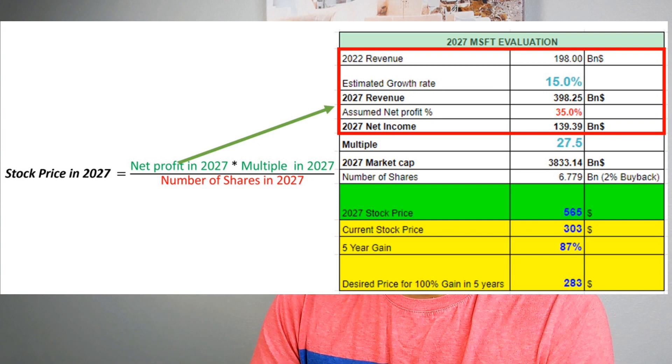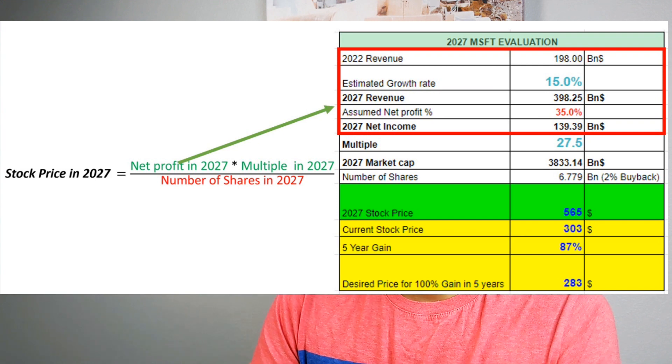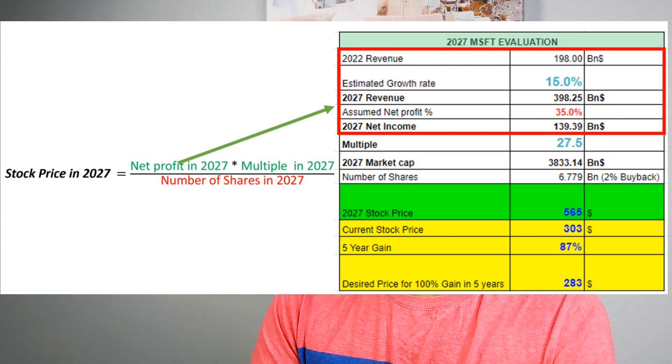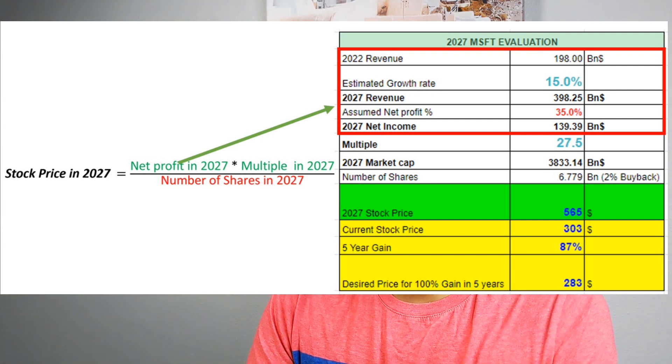Let me show you a sample calculation using Microsoft. Net profit is calculated by the numbers in the red box. To calculate it, we start with 2022 revenue. For Microsoft, that's about $198 billion. To get this number, I use stockanalysis.com — you go there and search for MSFT, which is the ticker for Microsoft.